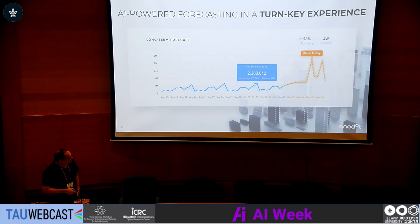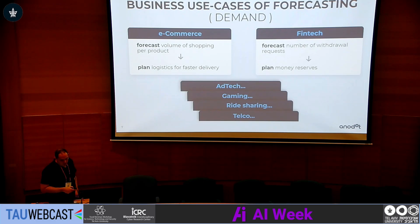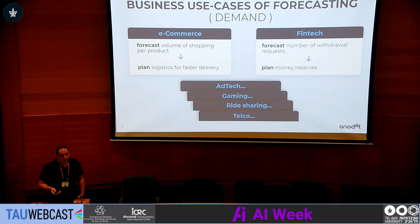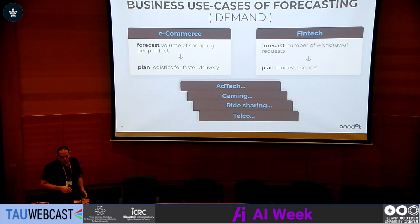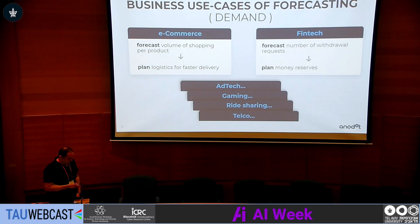Events can be things you learned about in the past but can already foresee — like Black Friday or holidays — that can influence the behavior of this metric, this time series. And what you'd like to do is get a forecast for the next, in this example, four weeks. The use cases we saw in business come from multiple verticals. For example, in e-commerce, if you can forecast the volume of shopping per product, you can better plan logistics for faster delivery. Or in fintech, if you can forecast the number of withdrawal requests over time, you can plan your money reserves.